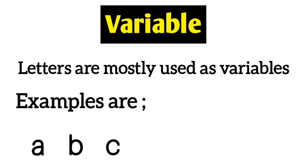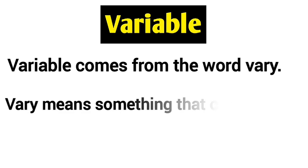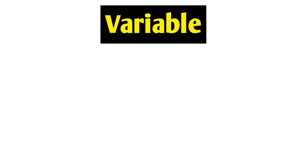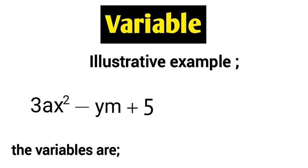Some examples of letters used as variables are a, b, c, x, y, z, and so on. The word variable comes from the English word 'vary,' which means something that changes. This means the values of variables can change for any algebraic expression. For example, in the expression 3ax squared minus ym plus 5, the variables are clearly a, x, y, and m.